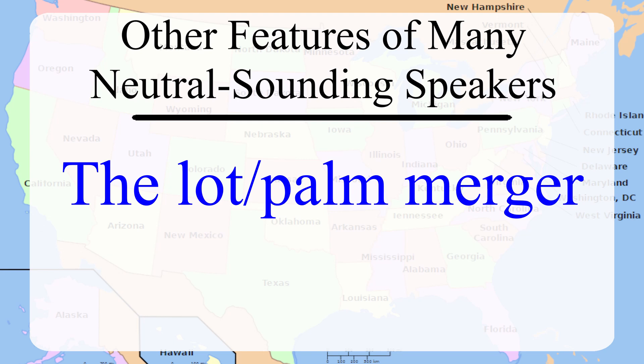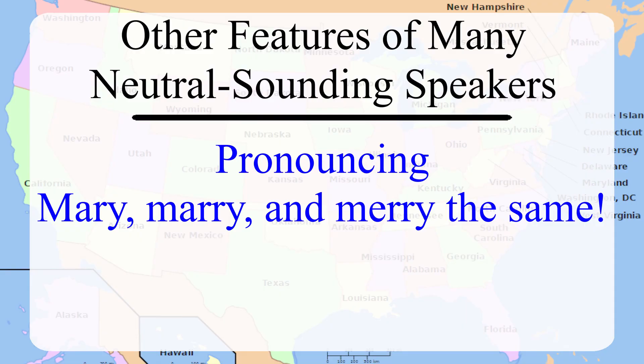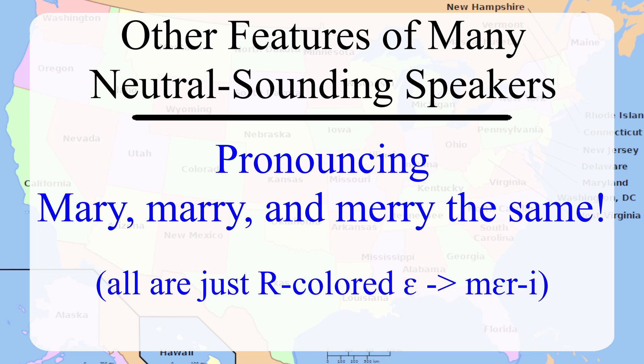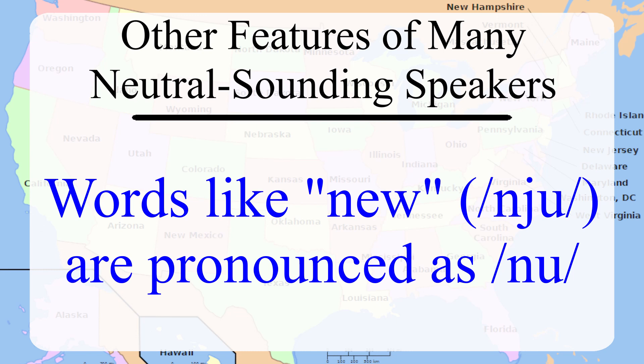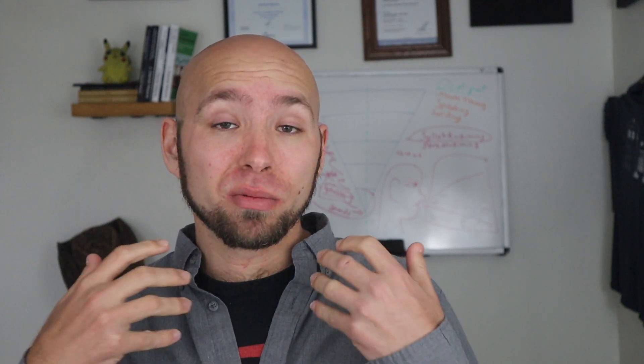The lot-palm merger, where the L is silent and uses the same 'ah' sound; pronouncing Mary, merry, and marry the same instead of 'Mary' and 'Mary'; and pronouncing certain words like 'new' as 'new.' Note that these extra features like the cot-caught merger are not necessary to sound American or completely neutral — they are actually part of the small differences between the neutral sounding accents. As long as you master the core features of the American sound, especially the vowels, you should sound pretty neutral. It's really your choice how you want to speak based on the sound that you like.